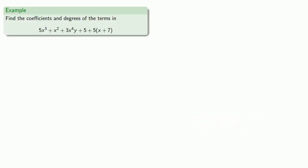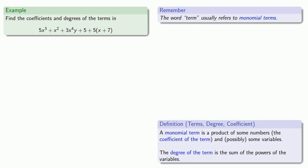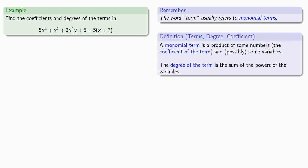Let's find the coefficients and degrees of the terms in this expression. Remember when we say term, we usually mean monomial term. Definitions are the whole of mathematics. So let's pull in our definition of terms, coefficients, and degrees, and look for some terms. This first thing, 5x to the third, is a term because it's the product of some numbers...